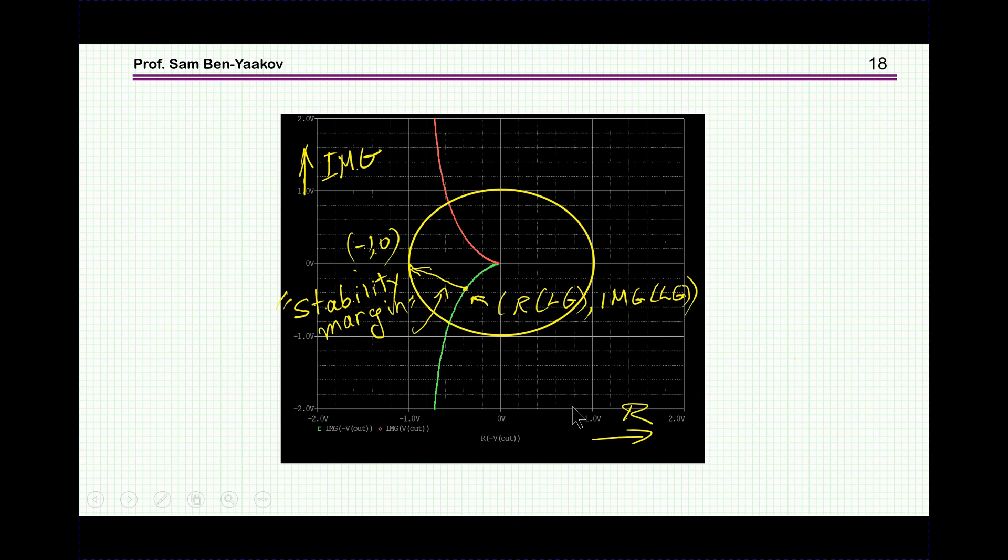Now there's another term here which has been defined which is called the stability margin and this is the distance between the loop gain curve and the minus one point. Well the idea is that how close you are to the danger zone let's call it this way. I don't know how important this parameter but anyhow it has been defined and it is being used. So the question is now, okay, this is this distance of course the worst case is when this distance is the shortest and the question is how can we get it?